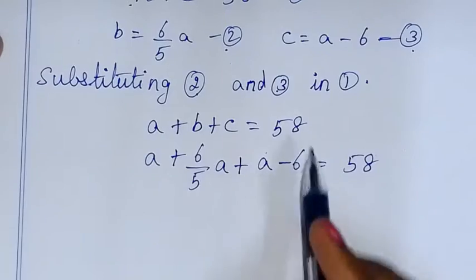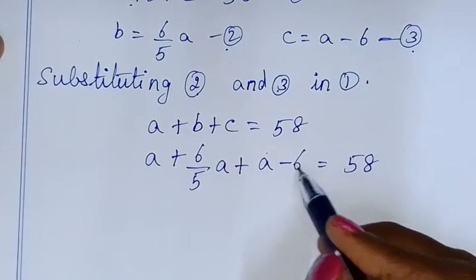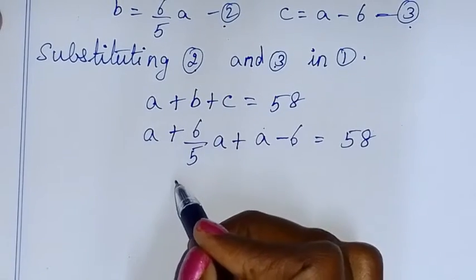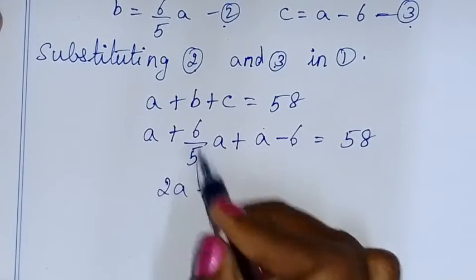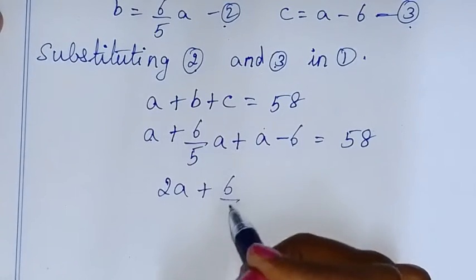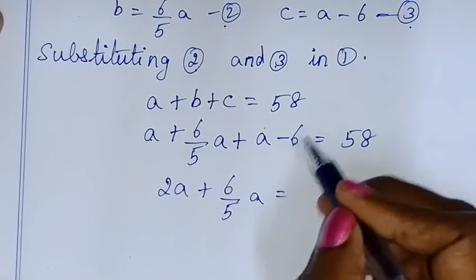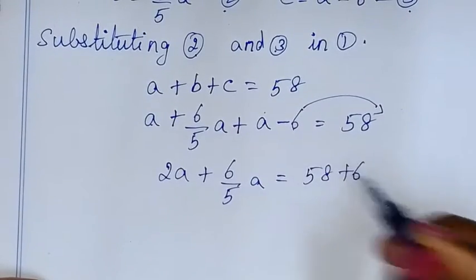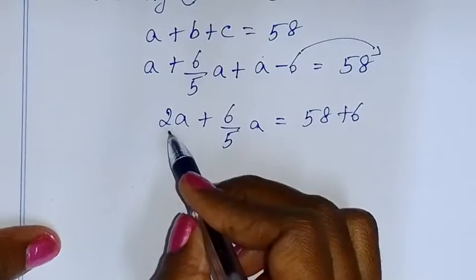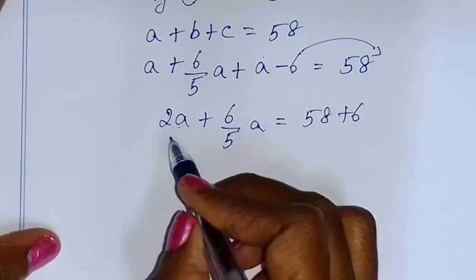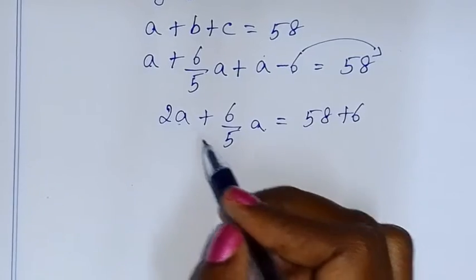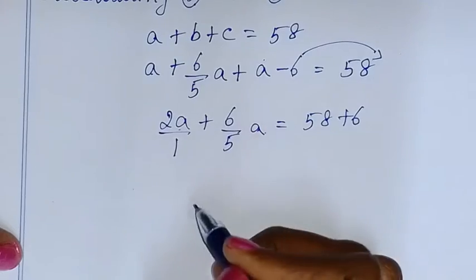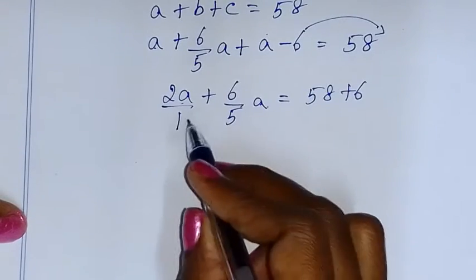Now everything has A as the variable, so we collect terms on one side. We apply fraction addition rules with LCM of 5. Converting to a common denominator of 5: we get 10A plus 6A over 5, and moving minus 6 to the right side gives 58 plus 6.